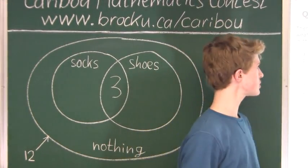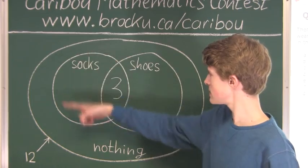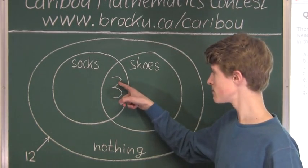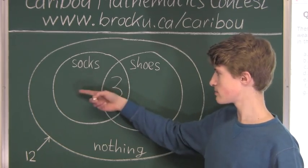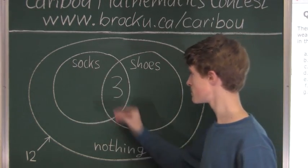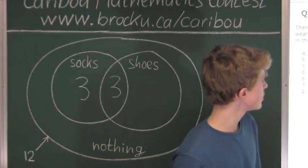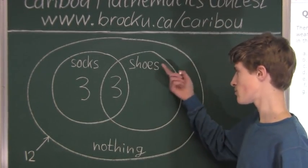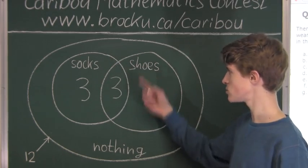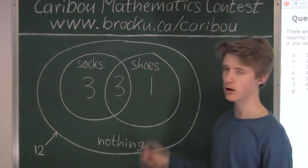Looking at the question again: 6 people are wearing socks with or without shoes, so 6 people must be in the socks circle total. Since 3 are already in the overlap, 6 minus 3 equals 3, so there are 3 people wearing only socks. Similarly, 4 people are wearing shoes, and 3 of those are wearing both socks and shoes, so 4 minus 3 equals 1 — one person is wearing only shoes.